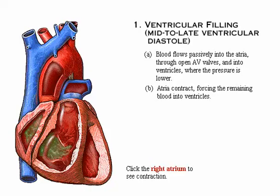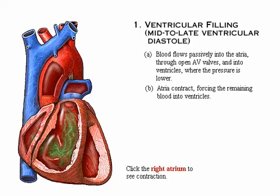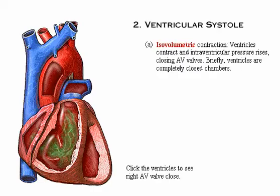Remember that blood is moving through both sides of the heart at the same time. The second phase of the cardiac cycle is ventricular systole. As the ventricles contract, intraventricular pressure rises, closing the AV valves. The brief period during which the ventricles are completely closed chambers is the isovolumetric contraction phase.